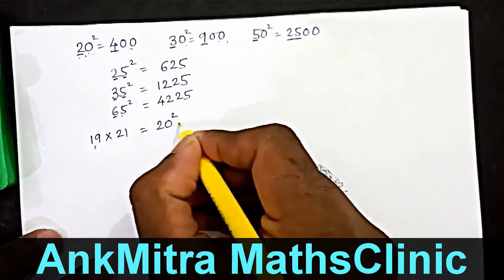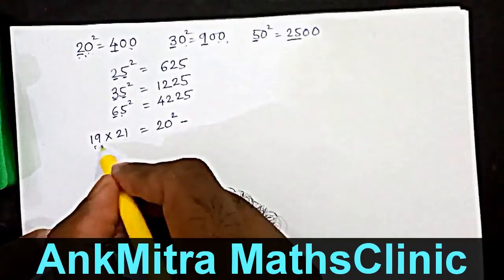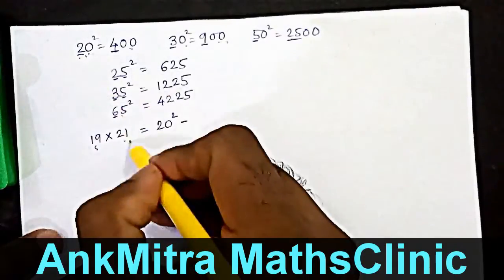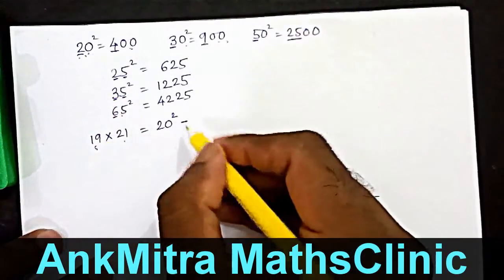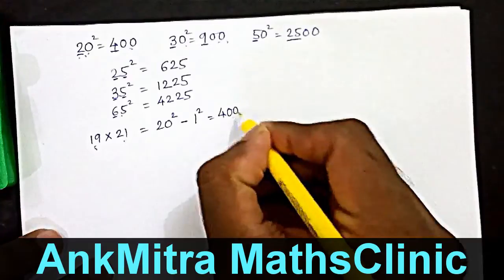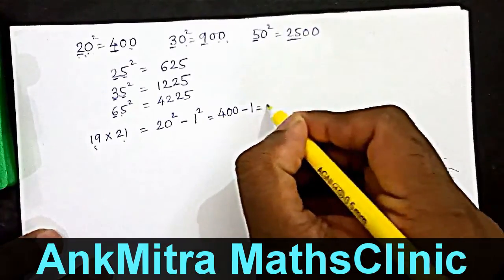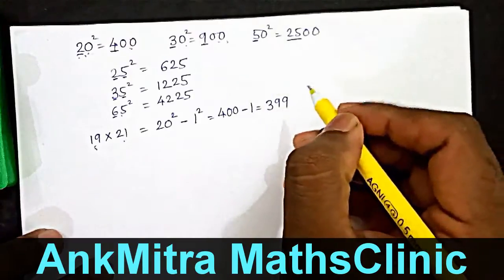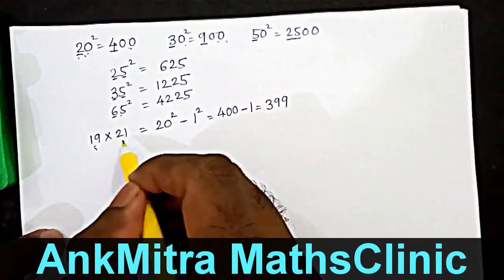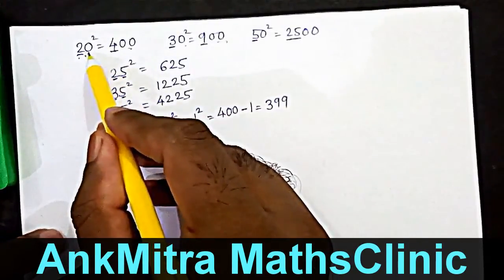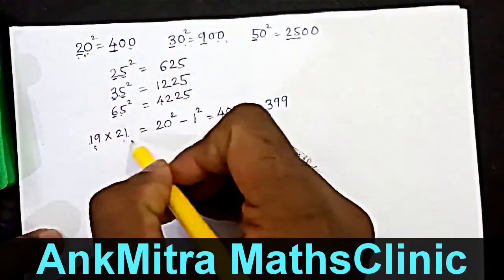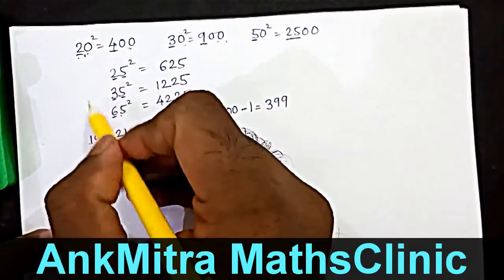To find the product of 19 and 21, we will first take 20 squared and then subtract the square of the difference between 20 and 19 (or 20 and 21). The difference between either of these two numbers and 20 is one. So one squared is one. The answer will be 20 squared — which is 400 — minus one, which is three hundred and ninety-nine. These two numbers were equidistant from 20: nineteen was one less than twenty, twenty-one was one more than twenty.